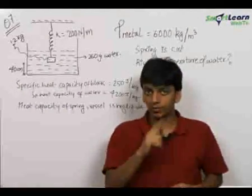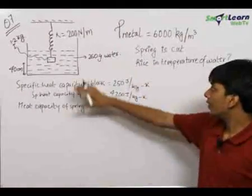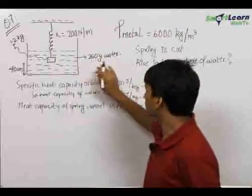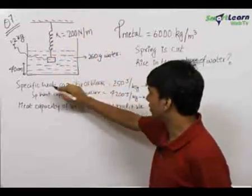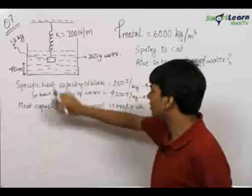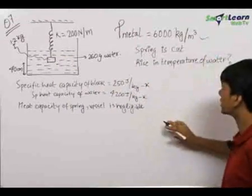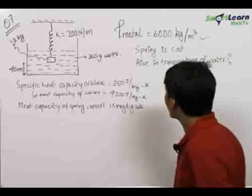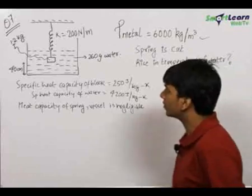Here we have an interesting and important question: a block hanging from a spring inside water. The spring constant and other data of the system is given. This block is initially at a height of 40 cm from the surface of the vessel. The density of the metal is given. The spring is cut and we need to find out the rise in temperature of water.